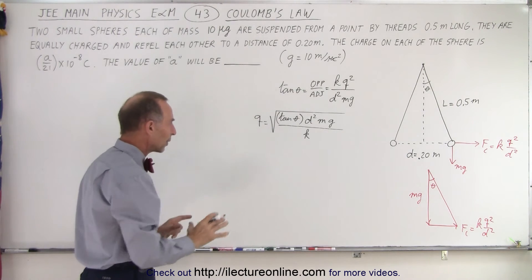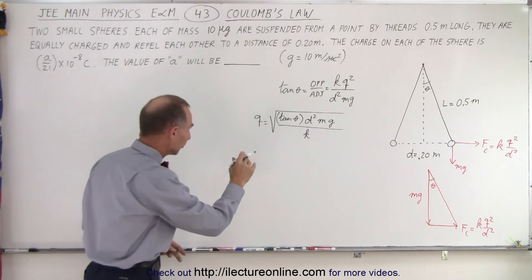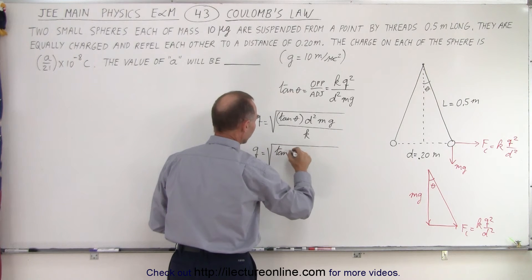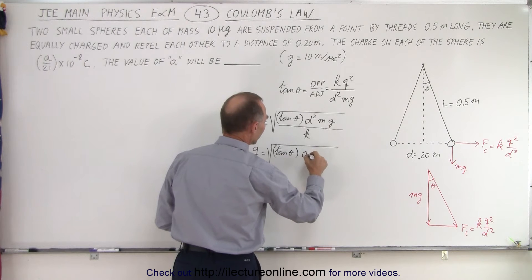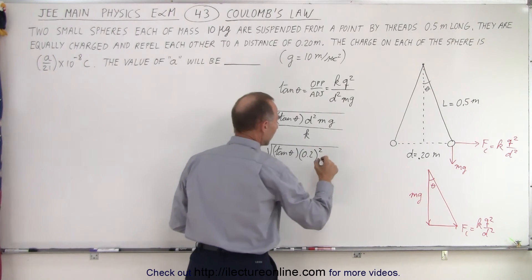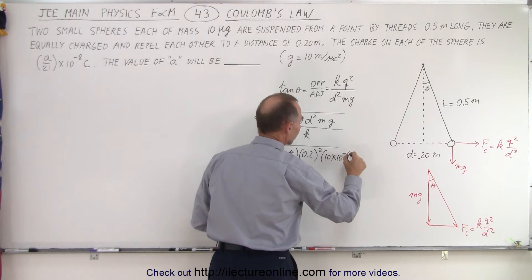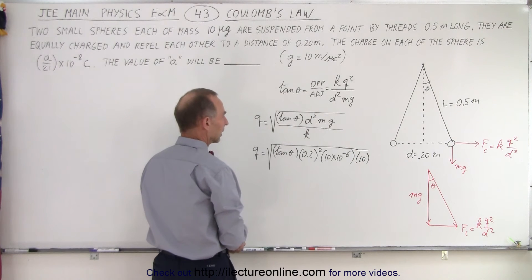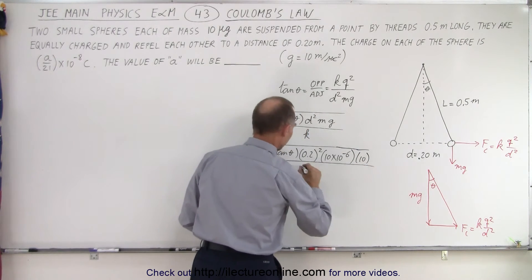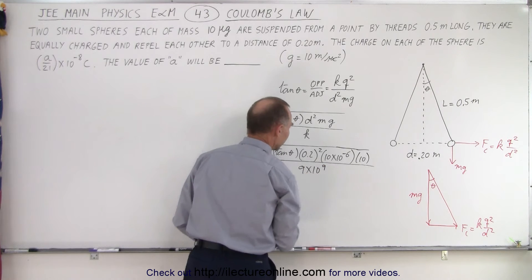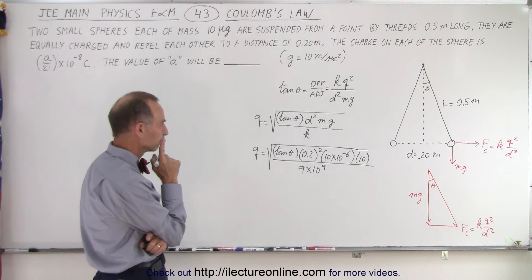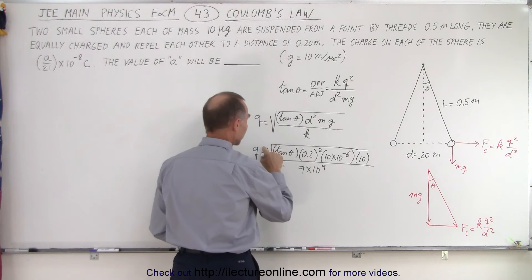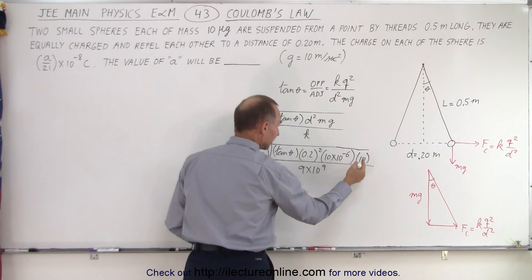All right, let's plug in the numbers that we have, and we'll leave tangent of theta for a moment. We have Q is equal to the square root of the tangent of theta. D will be 0.2, and we square that. M will be 10 times 10 to the minus 6, and G will be 10. In the denominator, we'll have 9 times 10 to the ninth. So what can we already take out? We have a 0.2 squared, that can be taken out of the square root sign.